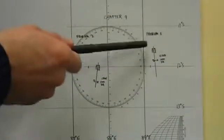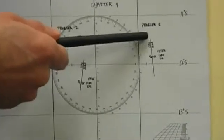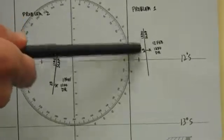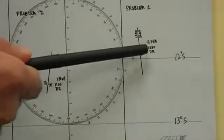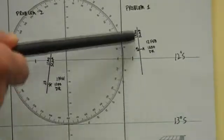And here we see the solution done using the standard intercept method of Saint Hilaire. The dead reckoning position is plotted here, and this is the line of position.